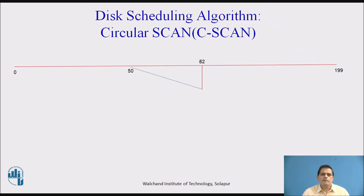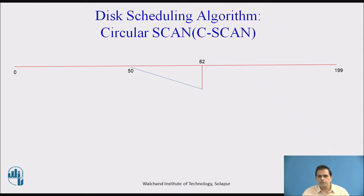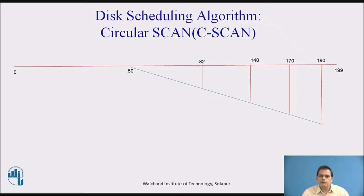From 50, the head moves to 82 and services it. From 82, the next large value is 140, so we move and service 140. From 140, the next large value is 170. From 170, the next large value is 190. So from the current position 50, moving in the same direction, the head services track requests 82, 140, 170, and 190. In C-Scan, we continue moving until the end of the track at 199.